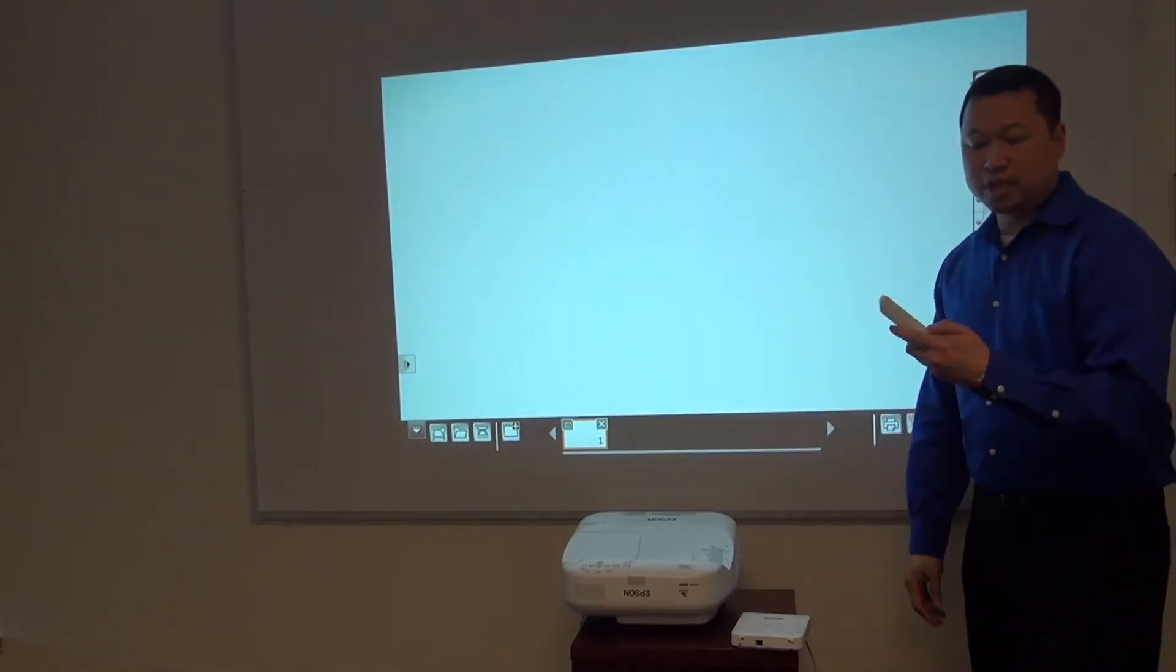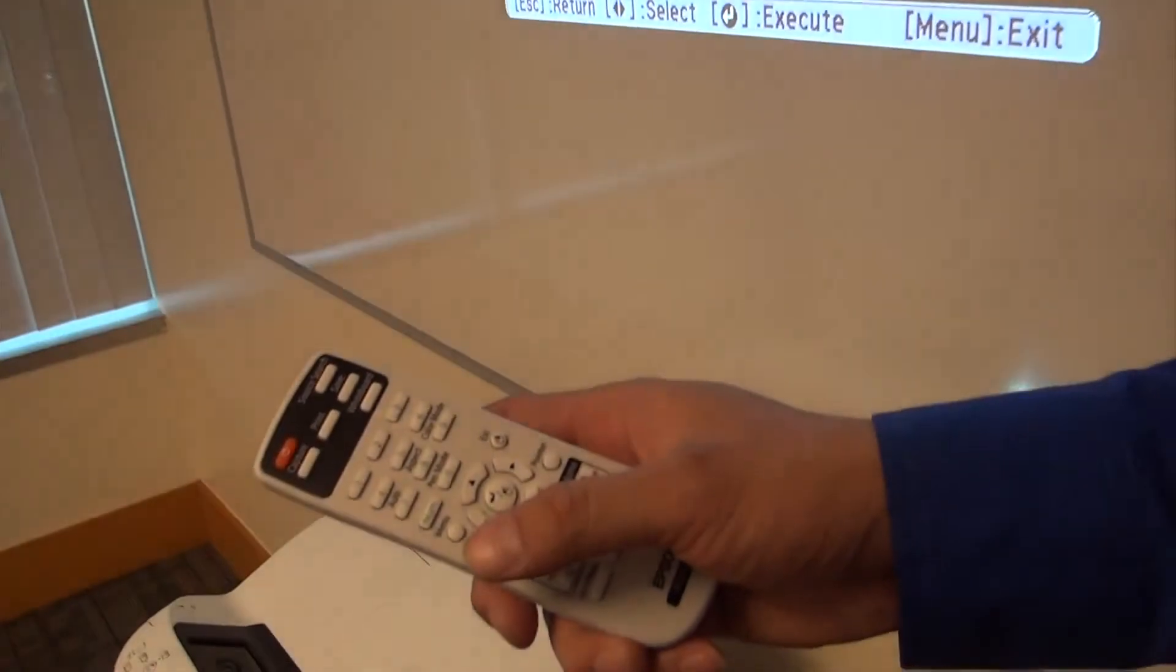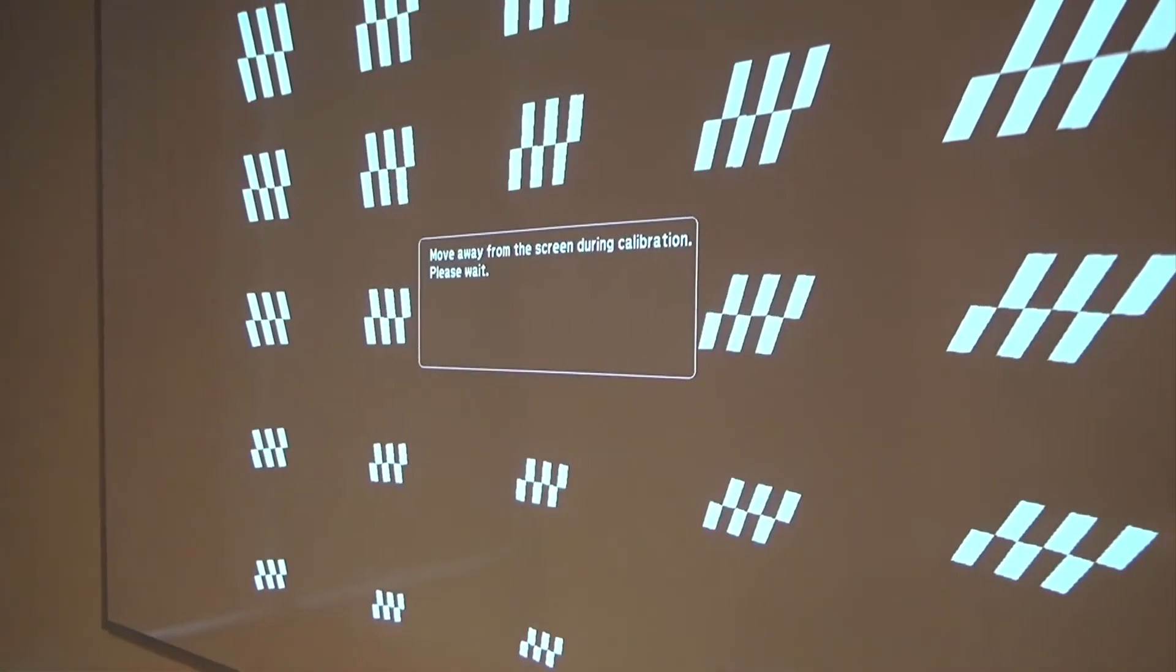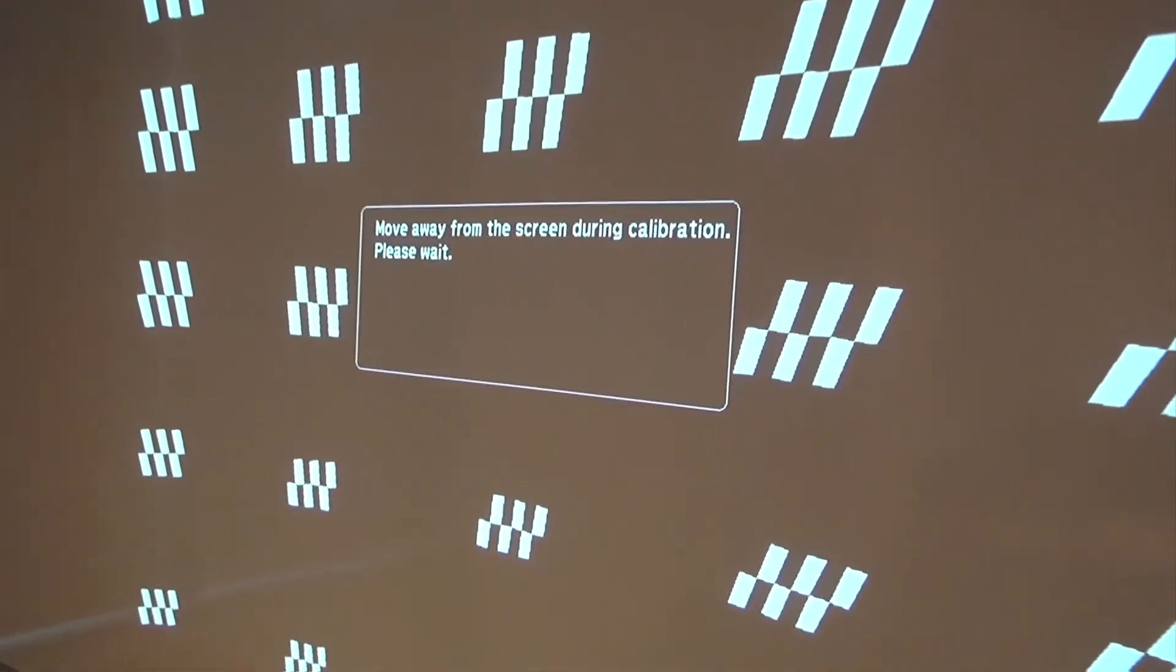And then on the remote control, you're going to hit the user button, which auto-calibrates the interactivity. You need to step away from the screen at this point.